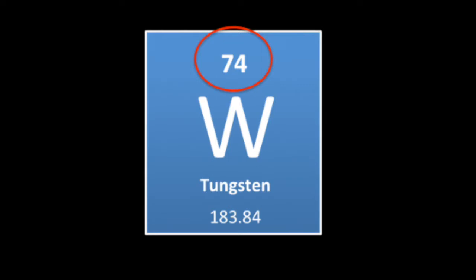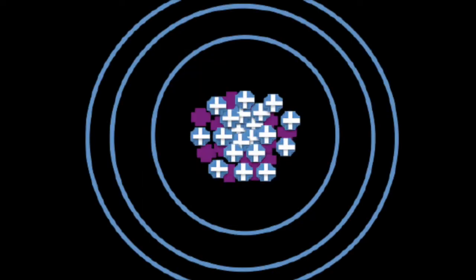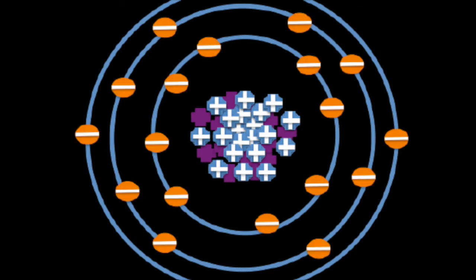This means that each atom of Tungsten has 74 protons in its nucleus. In neutral form, this is also equal to the number of electrons in the atom's electron cloud.